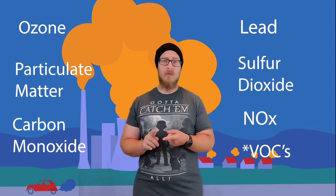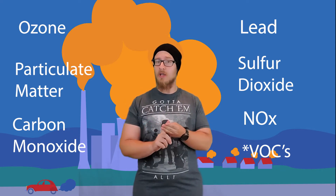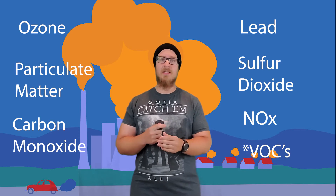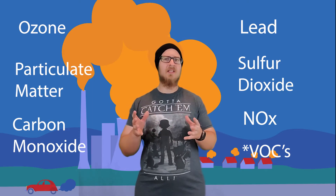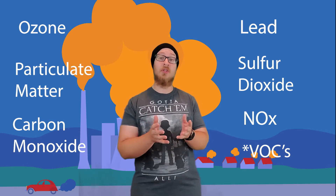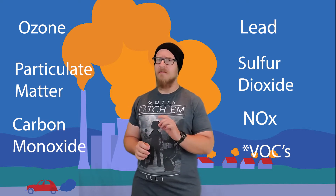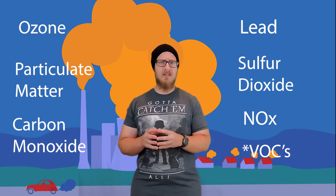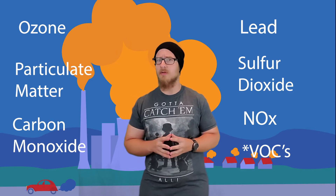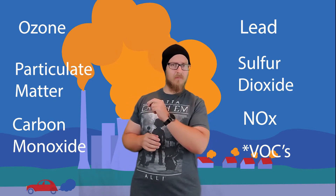There are six pollutants that the Environmental Protection Agency, or the EPA, has identified as meeting these criteria: ground-level ozone, particulate matter, carbon monoxide, lead, sulfur dioxide, and nitrogen oxides. This is NOx, because it could be composed of either nitrogen dioxide or nitrogen oxide. Mr. W will also add volatile organic compounds to this list — it's not officially a criteria pollutant as listed by the EPA, but it's an important pollutant.